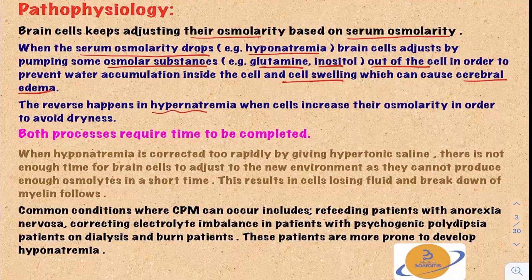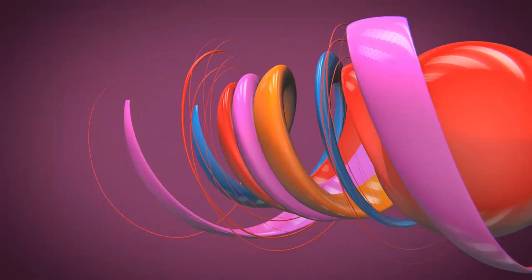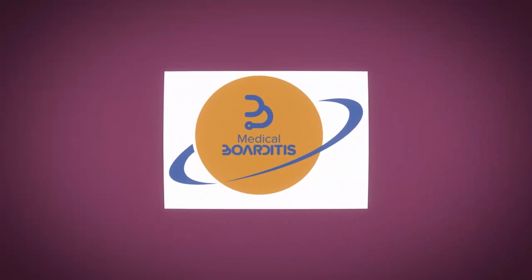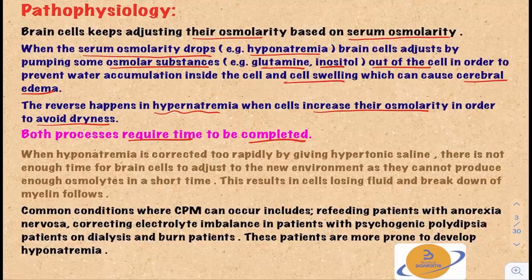The reverse happens in hypernatremia — the cells increase their osmolarity in order to prevent dryness. Both processes actually require time to be completed, and this is the trick. So when low serum sodium or hyponatremia is corrected too rapidly by giving hypertonic saline, there is not enough time for the brain cells to adjust to the new environment, as they cannot produce or synthesize osmolytes in a short time.